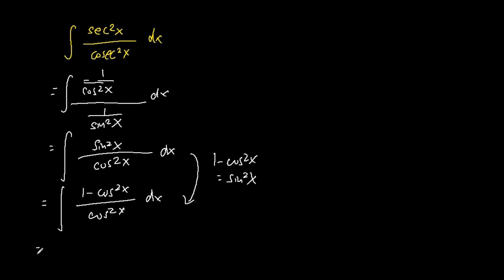Then we split the fraction up into two fractions. One is 1 minus cosine square x. The other one is cosine square x over cosine square x.